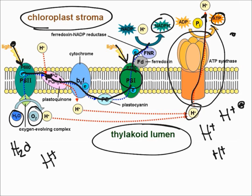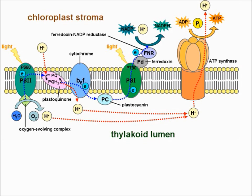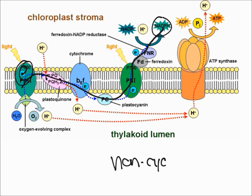There are essentially two different types of photophosphorylation: cyclic and non-cyclic. This distinction refers to the path of electrons. In the non-cyclic type, light hits Photosystem 2, electrons travel all the way through the chain, and eventually out to NADP+.